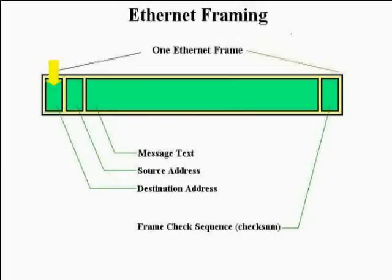The first important field within an Ethernet frame is called the destination address — just like a telegram, it tells you to whom the message is intended. The second important field in each Ethernet frame is the source address, or a description of the person or station sending the message — again, just like an old telegram. The third important field is the main body of the text, once again just like a telegram.